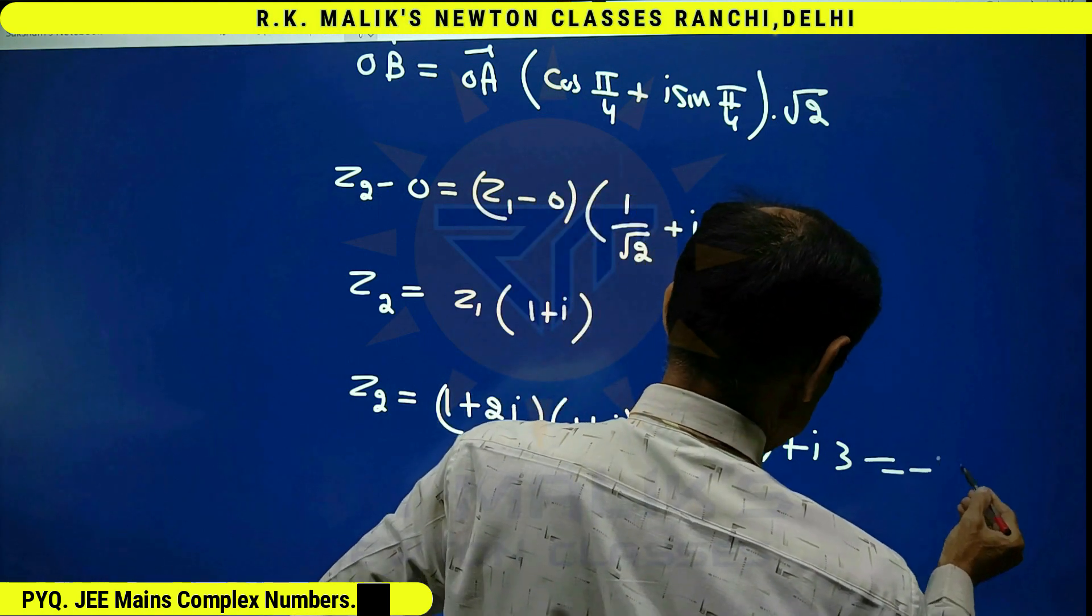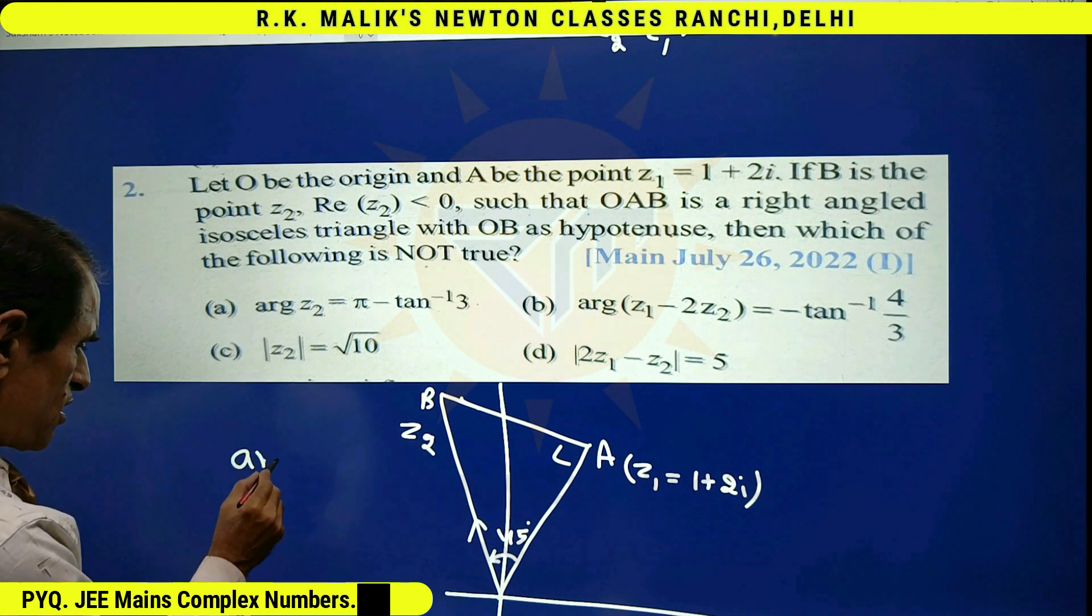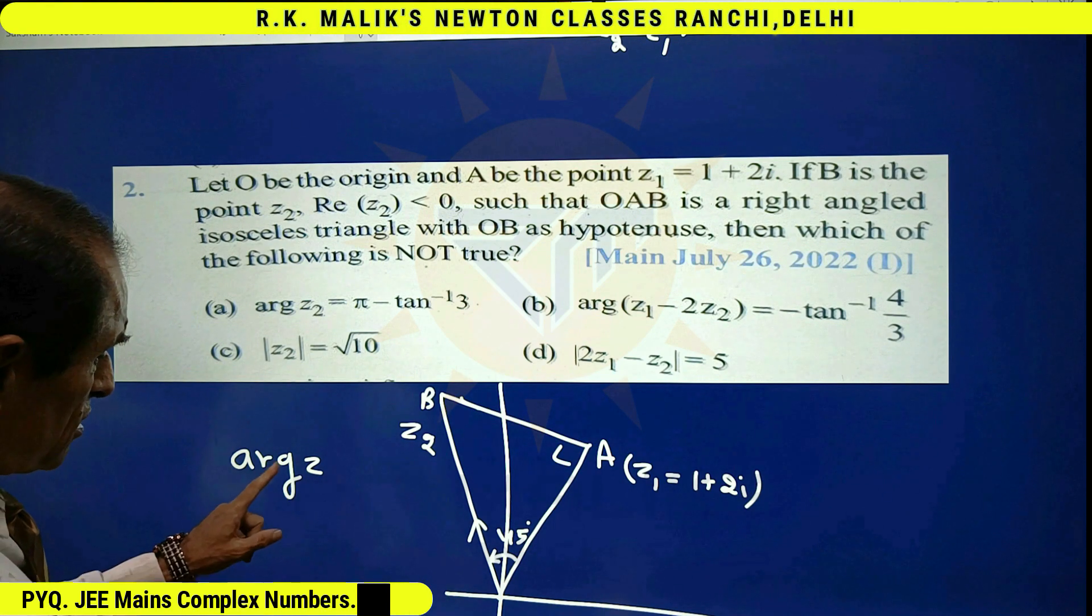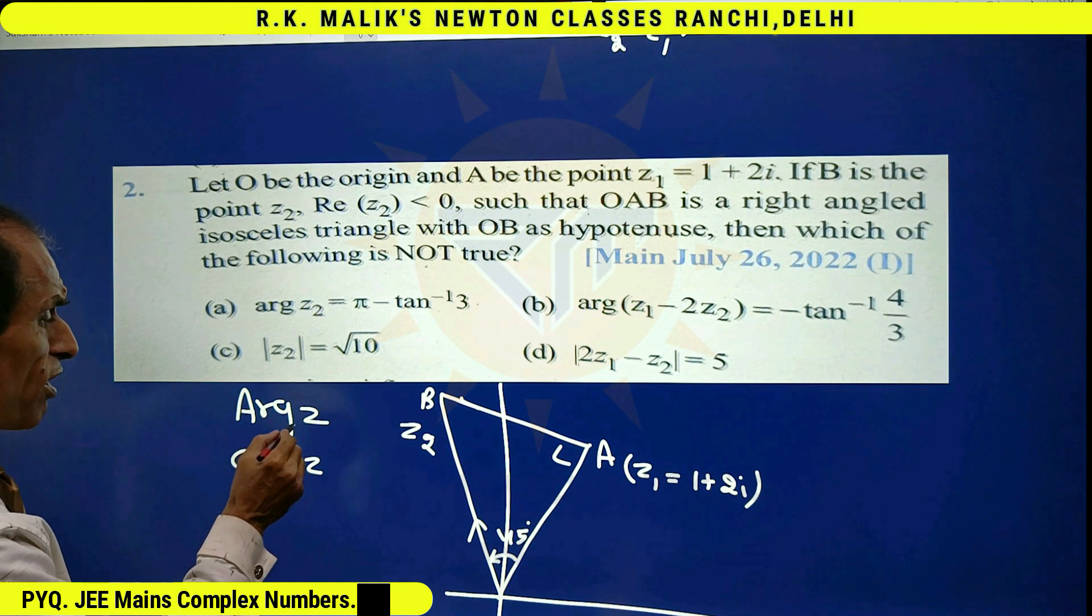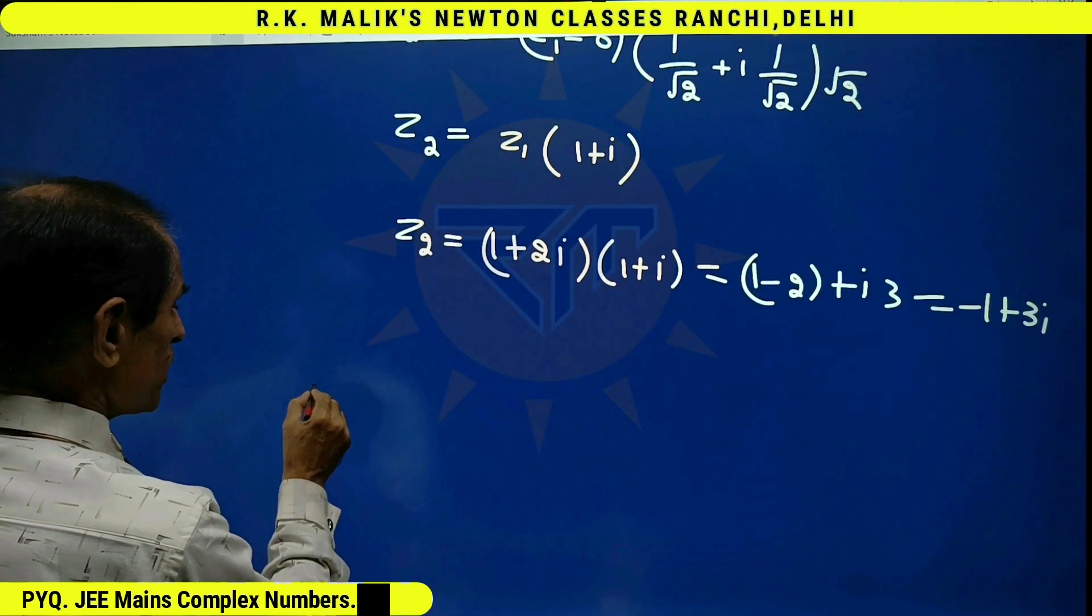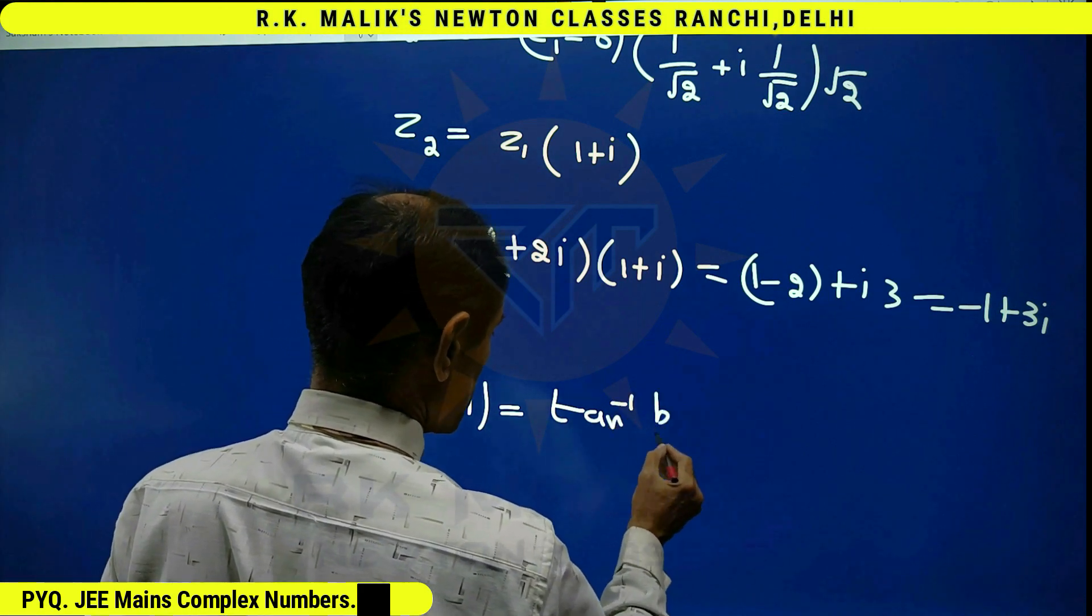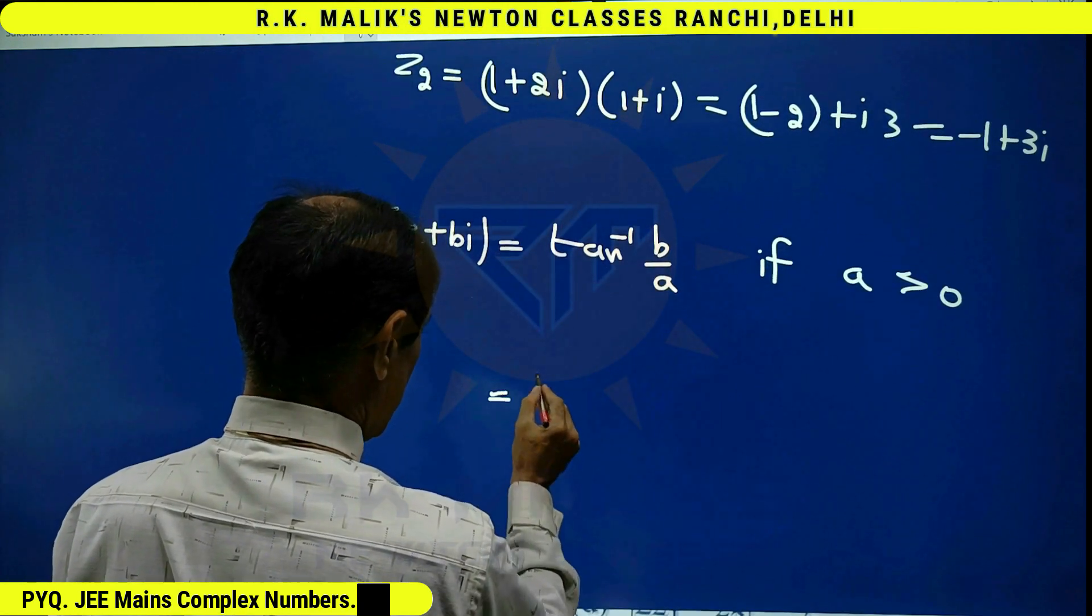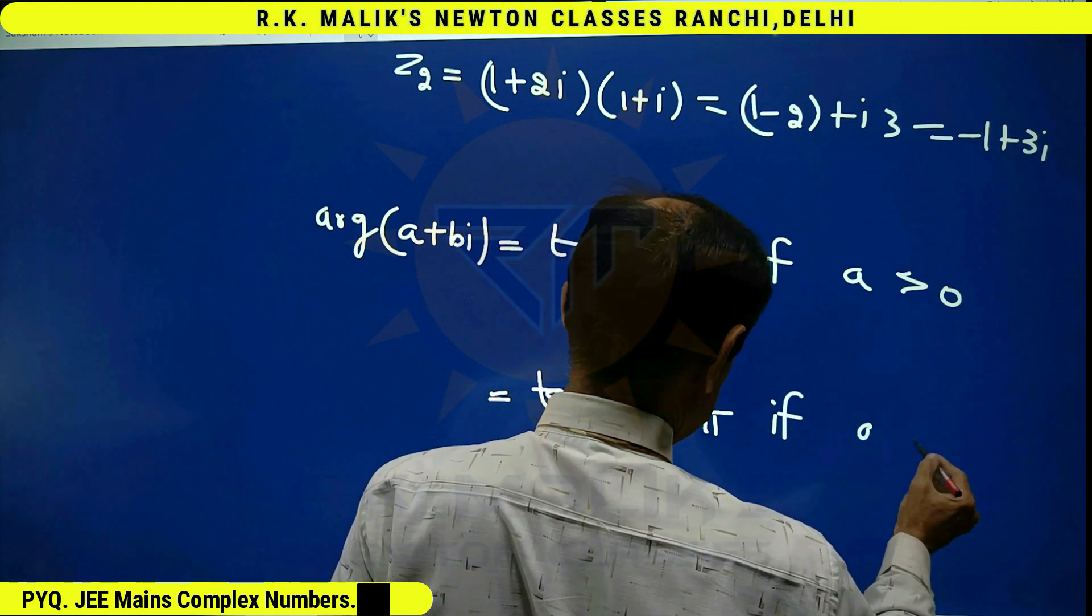Note that the examiner has written arg z with small 'a', which means he is telling us to find the principal argument. Small 'a' means principal argument. We know that formula is argument of a plus bi is tan inverse (b/a) if a is positive, and tan inverse (b/a) plus or minus π if a is negative.